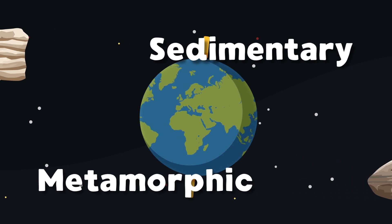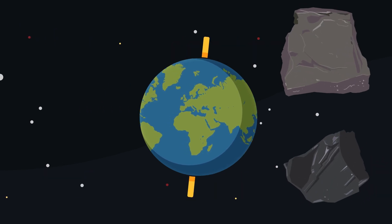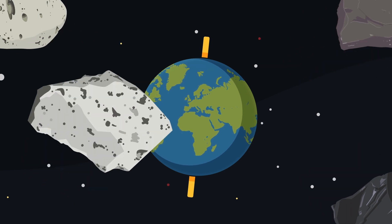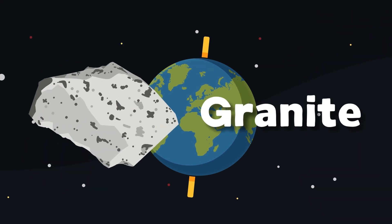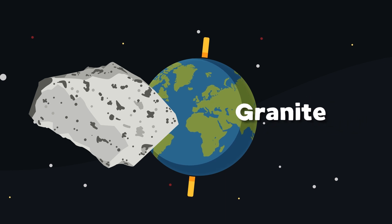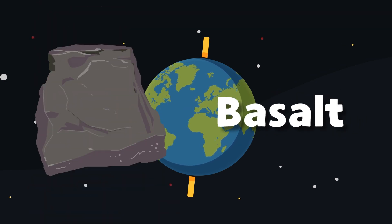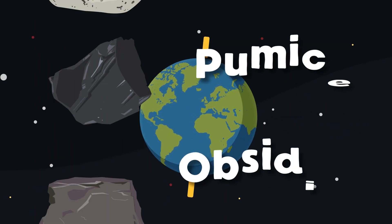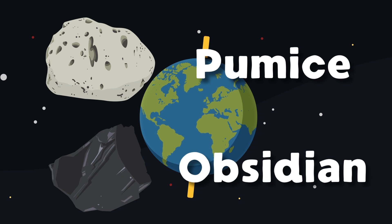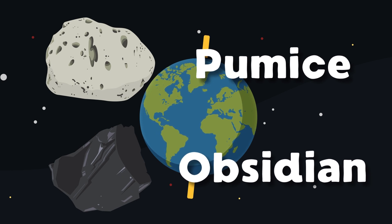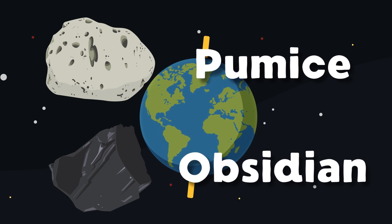Examples of igneous rocks: granite is the first — you've heard of this one, I bet. Then we have basalt with its fine-grained texture. Obsidian and pumice are the third and fourth.